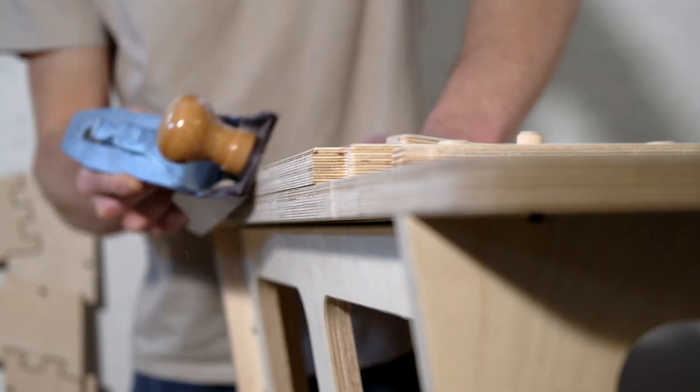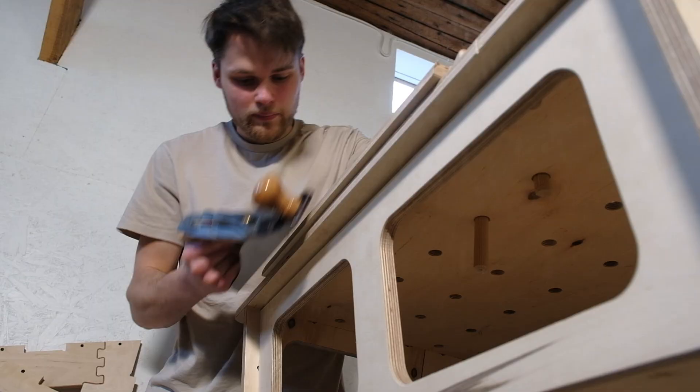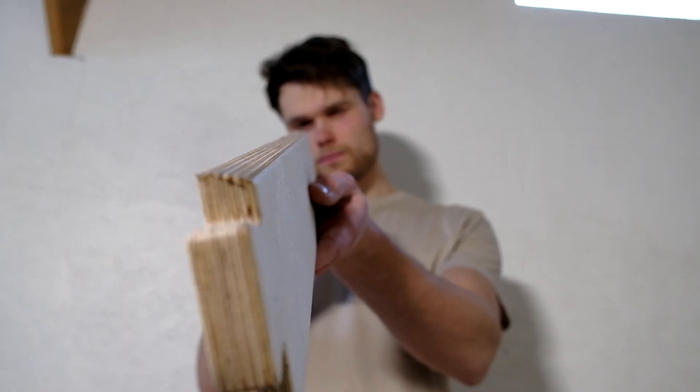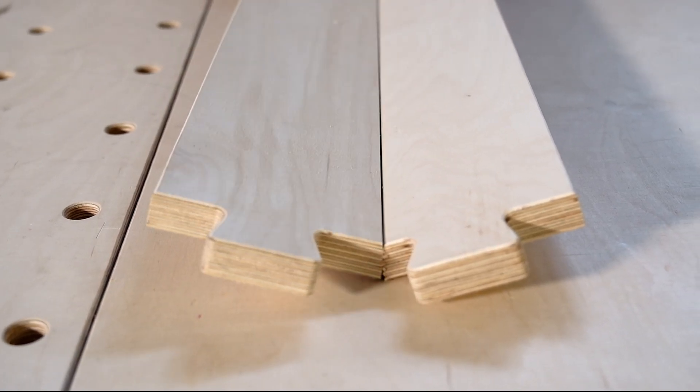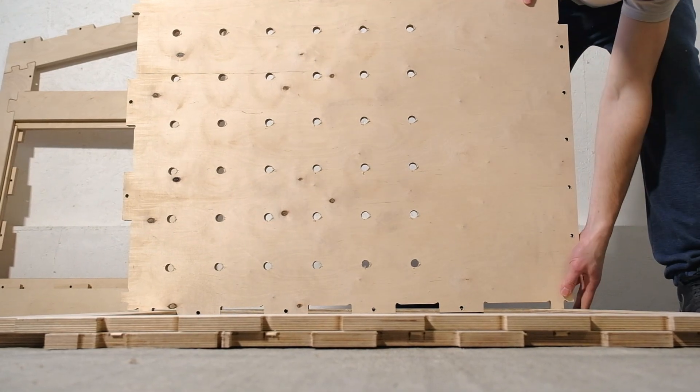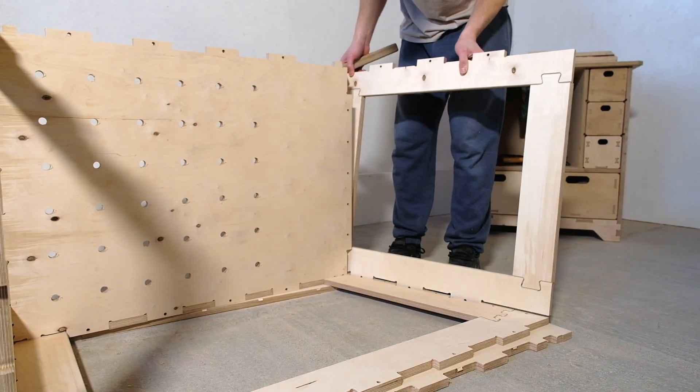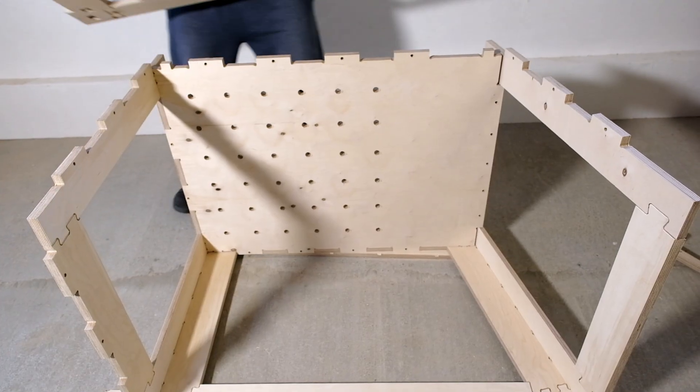Before assembling the sloped table saw side I planed the edges at a 15 degree angle using a hand planer. It had to be done so the table top and the shelf components would fit nicely with the frame horizontal parts. After that I could finish assembling the sloped frame and put the table together.